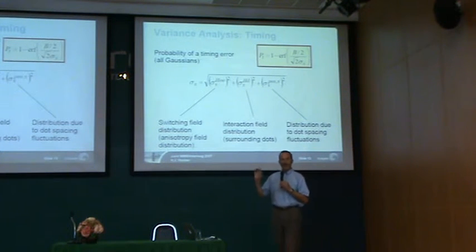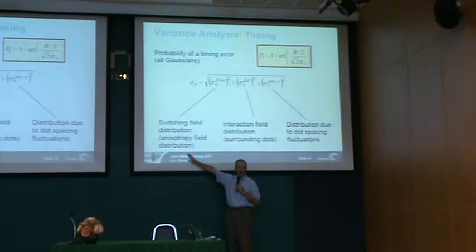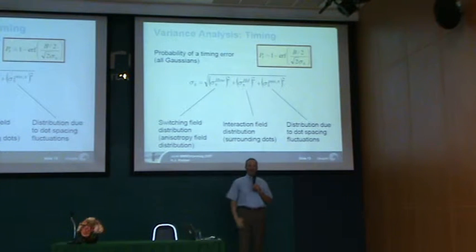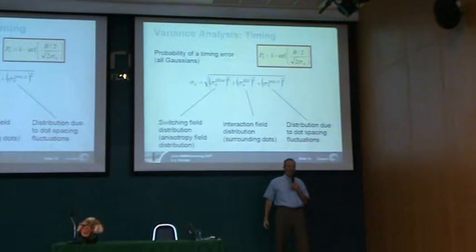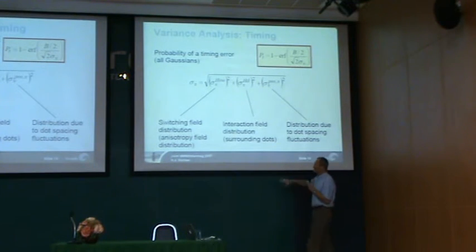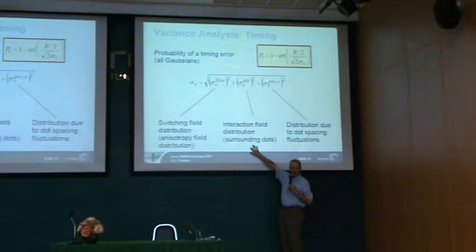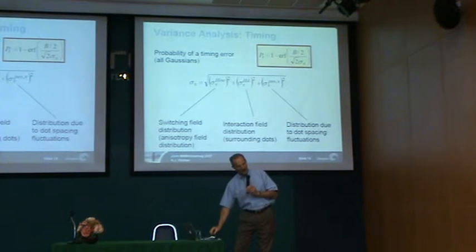There's also a distribution due to dot spacing fluctuations — this is the lithography term. The fact that lithography isn't perfect means the edge of the bit will have some variance in its position. In principle, I could make a material with perfectly uniform anisotropy and keep improving manufacturing to reduce that source. I can also make better lithography tools to continually reduce those variations. But I can't do anything about the interaction field — I'm stuck with that one no matter what, because I can't control what's on the adjacent bits.